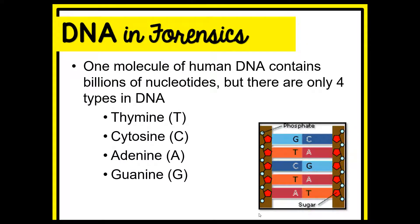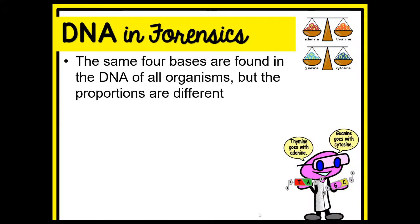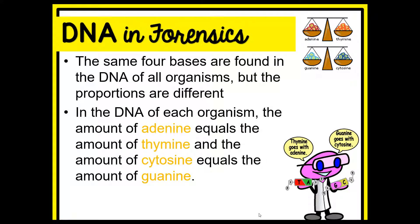We use single letters to represent those bases. A always pairs with T, and C always pairs with G. It is true that 99% of our DNA is the same from person to person, but there are segments within our DNA called short tandem repeats, or STRs — basically letters of DNA that repeat over and over — and these STRs differ from person to person. You can take a DNA profile or DNA fingerprint which focuses on these STRs to create what's called a genetic profile.